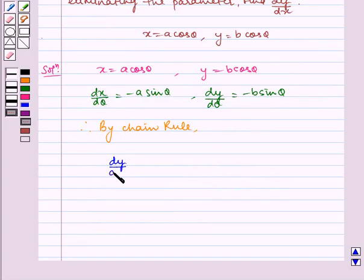dy/dx is equal to dy/dθ multiplied by dθ/dx, which is equal to... dy/dθ is equal to minus b sin θ multiplied by dθ/dx. We have dx